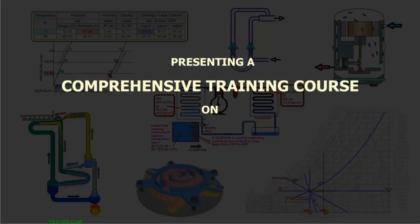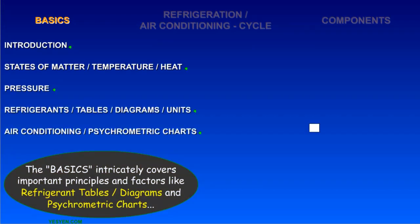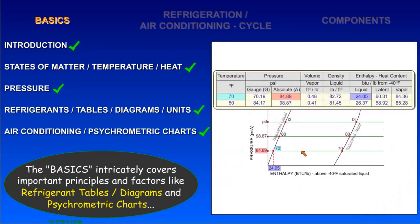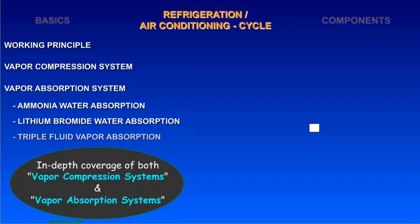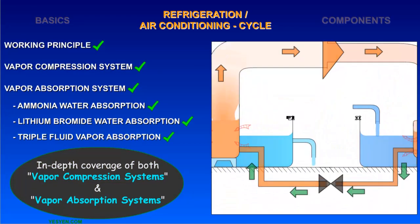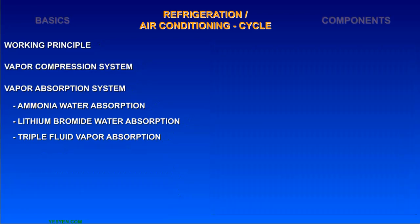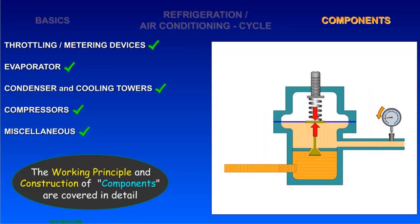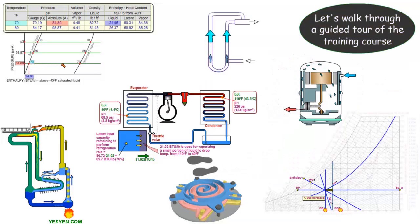Presenting a comprehensive training course on Refrigeration and Air Conditioning. The training course covers the topic in explicit detail. The basics intricately cover important principles and factors like refrigerant tables, diagrams, and psychometric charts. In-depth coverage of both vapor compression systems and vapor absorption systems. The working principle and construction of components are covered in detail. Let's walk through a guided tour of the training course.